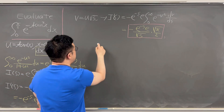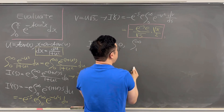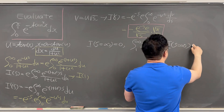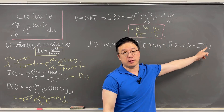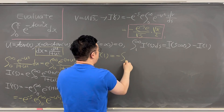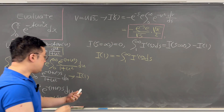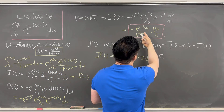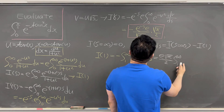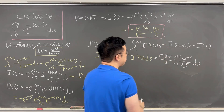We can notice that when s goes to infinity, I(s) equals 0. So the integral from 1 to infinity of I'(s) ds equals I(∞) minus I(1). Since we're interested in I(1), we get I(1) equals negative times the integral from 1 to infinity of I'(s) ds, which is the same as e times square root of π over 2, times the integral from 1 to infinity of e to the power of negative s over square root of s, ds.